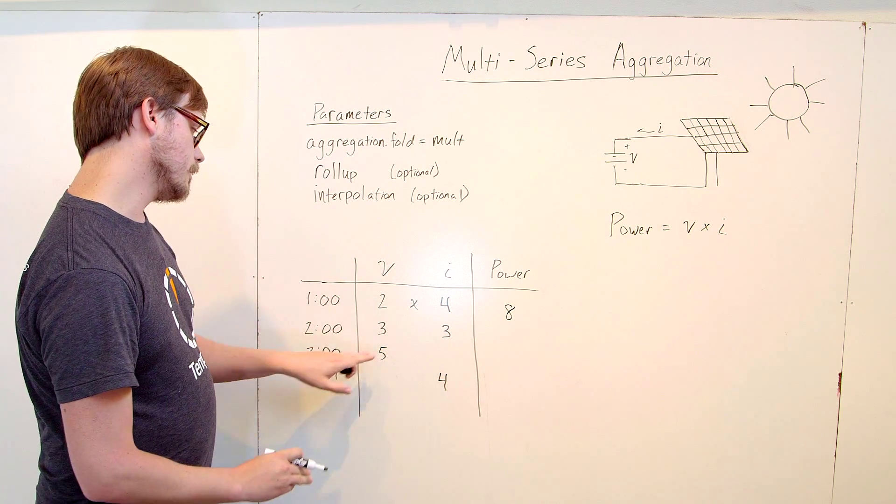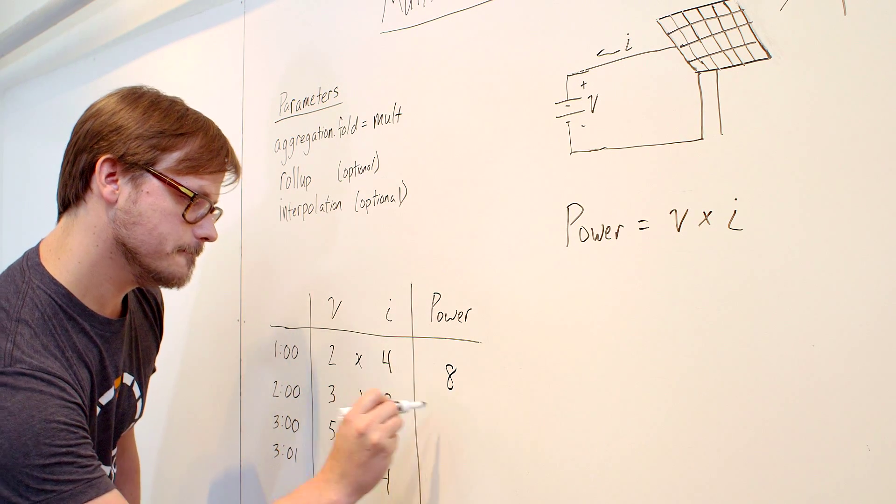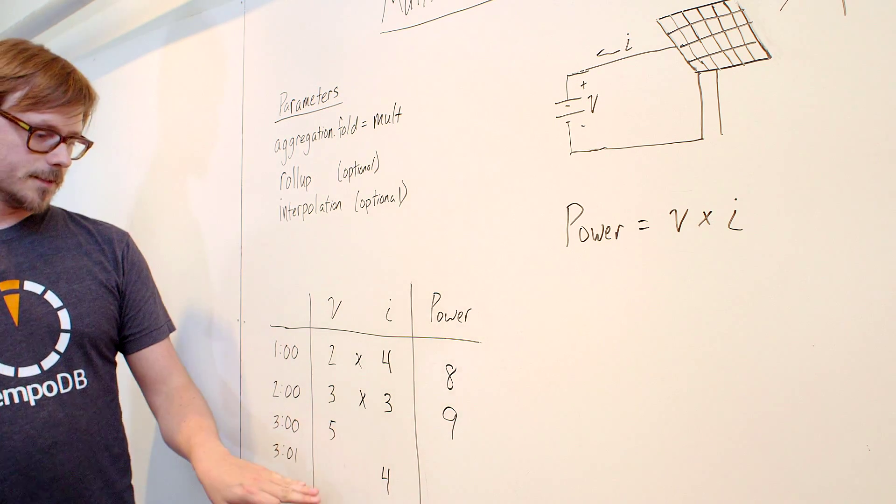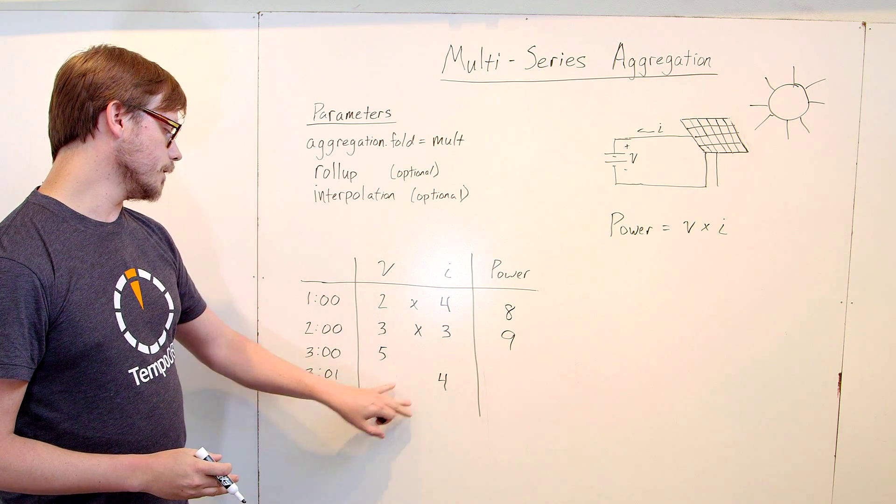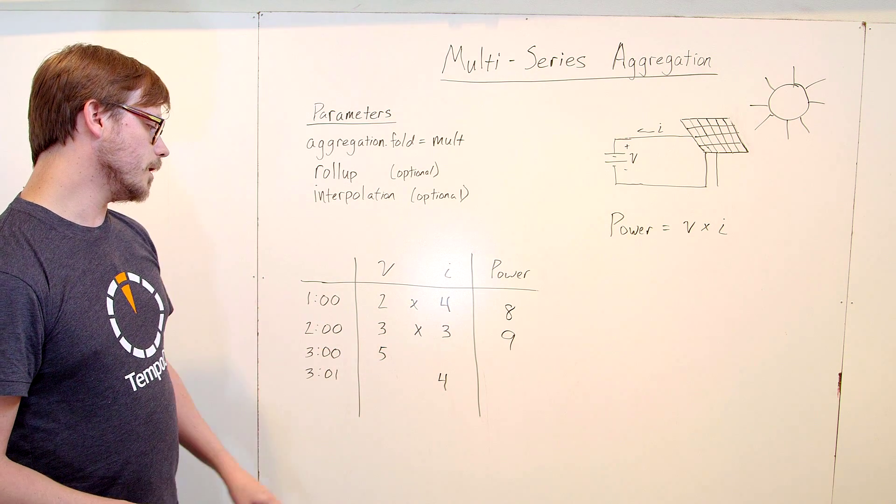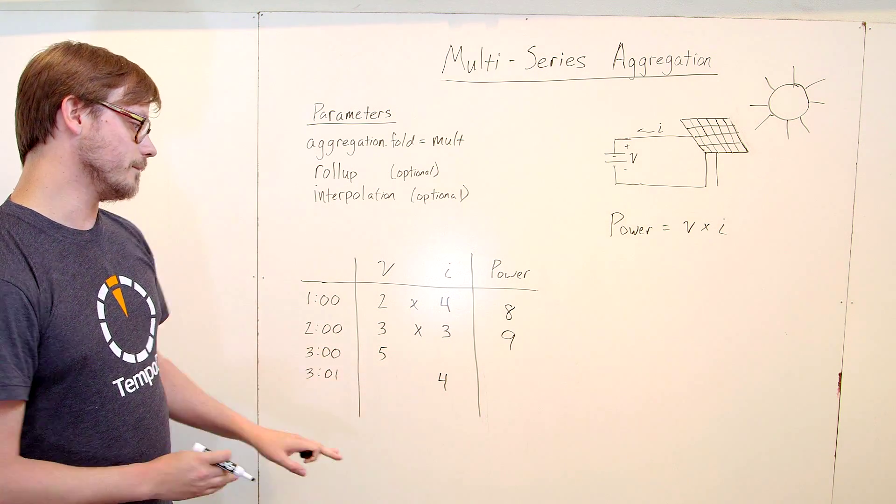At two o'clock, we've got a voltage of three and a current of three. Multiplied gives you nine. And at three o'clock, something happened. So let's say your sensor missed a measurement or the timestamps are a little off. We have a missing value at three o'clock. So the multiplication in this case would actually return five based on how it works.